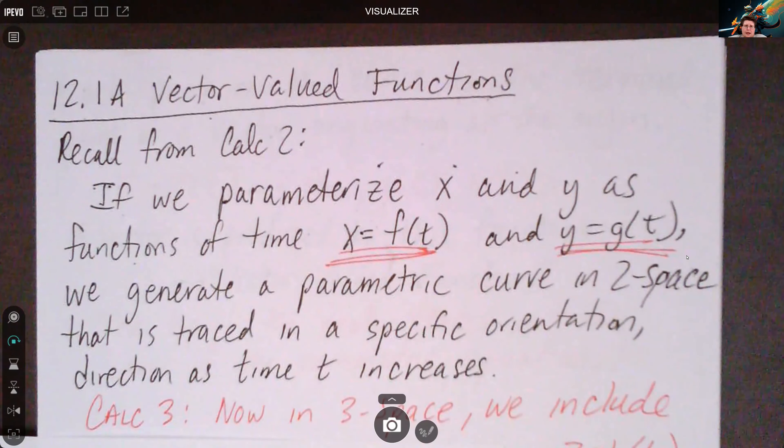We're going to be doing a lot of stuff with that. We're going to start off with parametrizing. So recall from Calc 2, if we parameterize x and y as functions of time, like x equals f of t and y equals g of t, we can generate this parametric curve in 2-space that's traced in a specific orientation or direction.